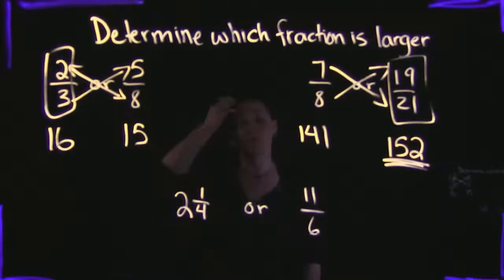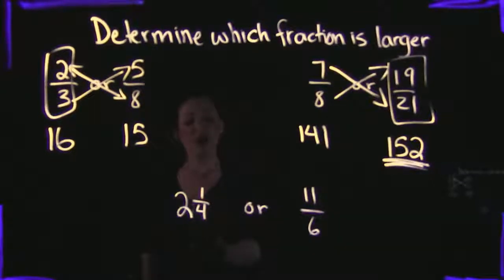So taking this 2 and 1 fourth, in order to convert that to an improper fraction, that's denominator times whole number - 4 times 2 is 8 - plus the numerator. Denominator times whole number, then plus the numerator. 4 times 2 is 8, plus 1 is 9, and put that over the same denominator.